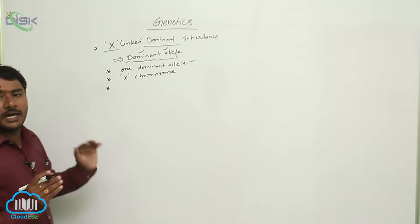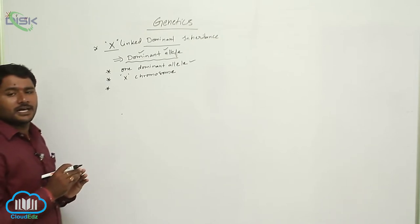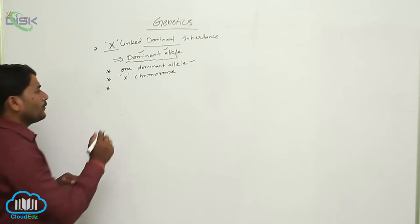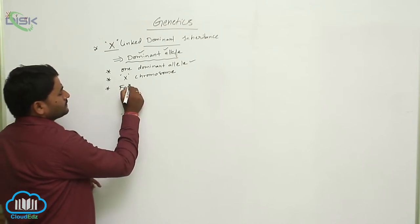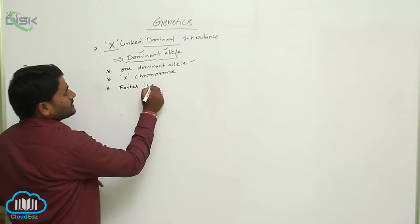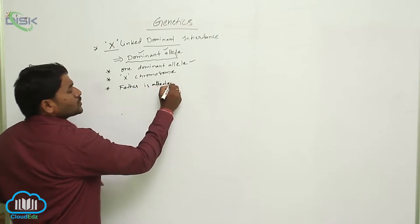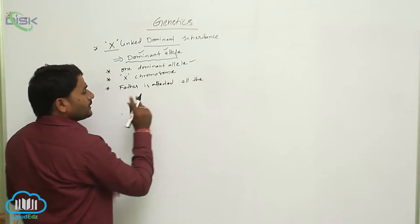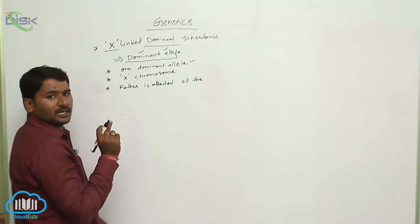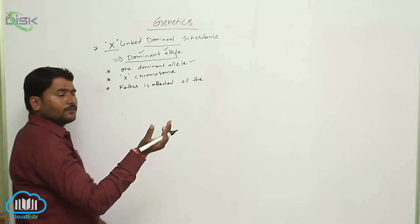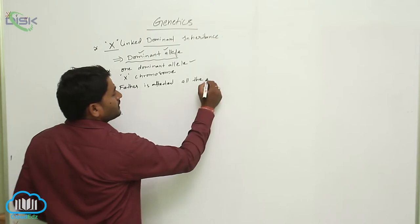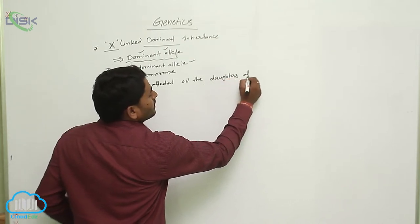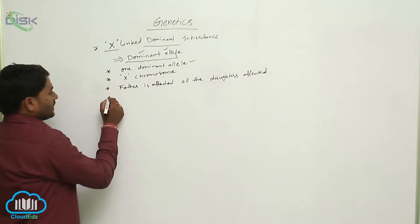Let us see the probabilities of this genetic disorder. If the father is affected, all the daughters will be affected. This is because when a father has one dominant allele on his X chromosome, that X chromosome will be passed to all his daughters.